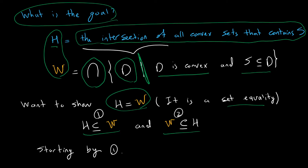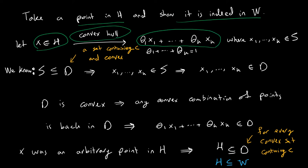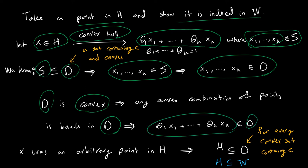I will start with the first inclusion. To show H ⊆ W, I take a point x in H and show that point is in W. Since x is in H and H is the convex hull, x is a convex combination of points in S. From the definition of W, each set d is convex and contains S. Because d contains S and all these points are in S, all these points would be in d. Since d is convex, the convex combination is back in d, so this point x would be in d.